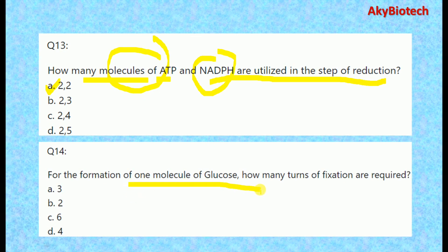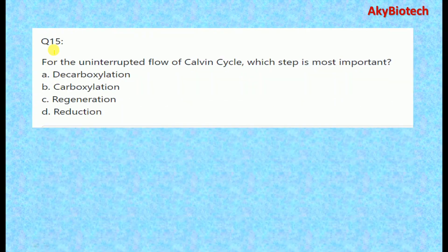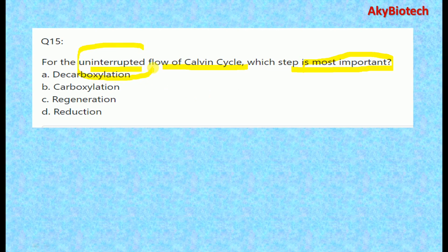Question fourteen: For the formation of one molecule of glucose, how many turns of fixation are required? Six turns are required. Question fifteen: For the uninterrupted flow of the Calvin cycle, the most important step is regeneration.